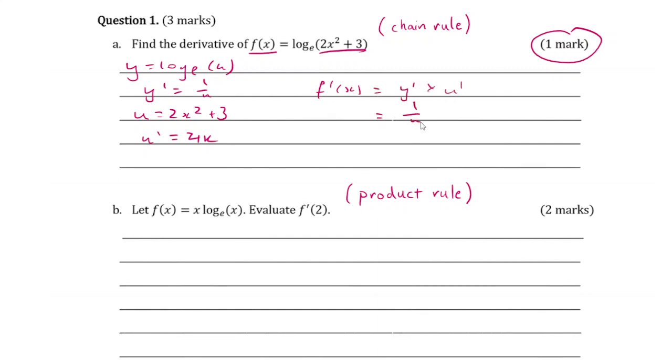Substituting in our functions, we get 1 over u multiplied by 4x. Resubstituting u, we get 4x over 2x squared plus 3. Done.